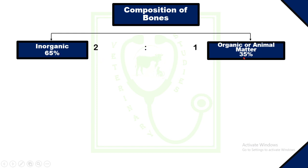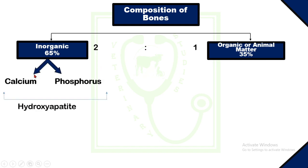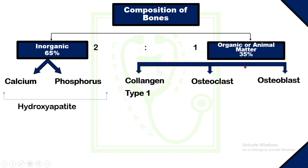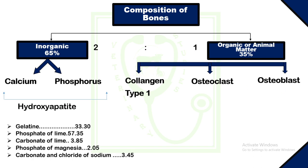The composition of bones: bone is composed of inorganic substance and organic substance. Inorganic substance constitutes about 65% of bone, whereas organic substance constitutes about 35%. The ratio of inorganic to organic matter is 2:1. Inorganic substances include minerals such as calcium and phosphorus, which together form a unit called hydroxyapatite. Organic matter includes collagen type 1, osteoclasts, and osteoblasts. The constituents yielded after boiling of bone are gelatin 33.30%, phosphate of lime 57.35%, carbonate of lime 3.85%, phosphate of magnesia 2.05%, and carbonate and chloride of sodium 3.45%.